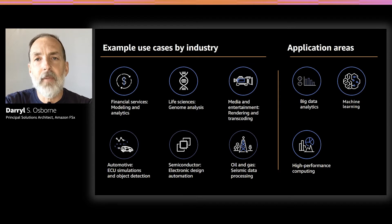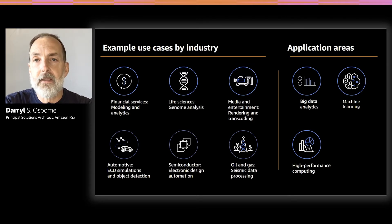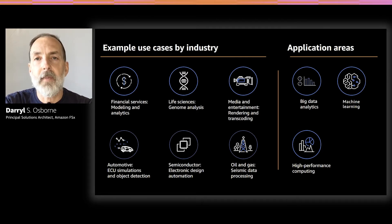In the automotive space, specifically autonomous vehicles, FSx for Lustre is used in electronic control unit or ECU simulations and object detection. We also see electronic design automation or EDA workloads with semiconductor manufacturers, and seismic data processing in the oil and gas industry.